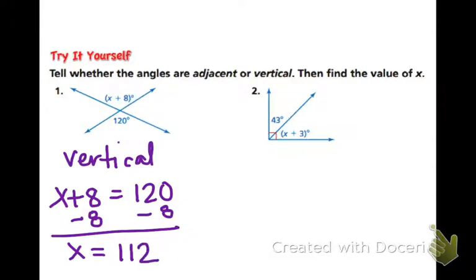In this case, it's not necessary to put the degree symbol because x is just a variable. It's the 112 plus 8 that equals the degrees, which is 120. In number 2, we see the angles are side by side. They have a common vertex right here. So that makes them adjacent.